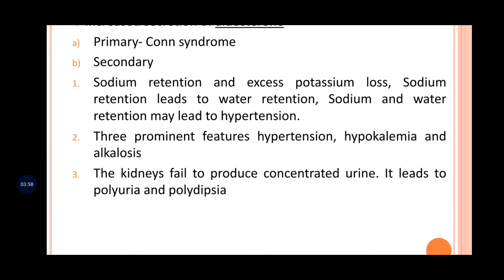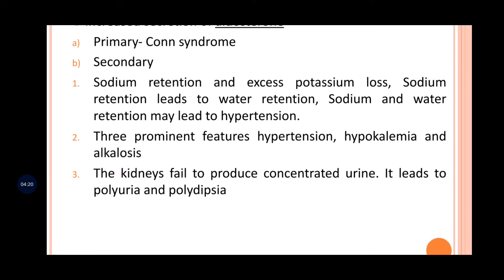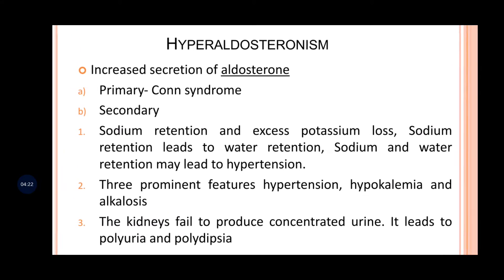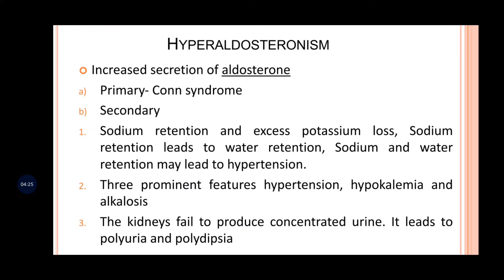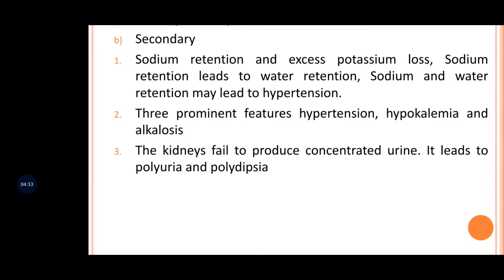The three prominent features of Conn's syndrome are hypertension, hypokalemia, and alkalosis. Hypokalemia occurs because with excess aldosterone, sodium is retained and potassium loss is increased, so the blood has less potassium ions — this is hypokalemia.